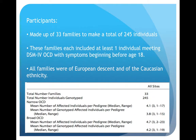The study was made up of 33 families totaling 245 individuals, each with their respective genotype data. These families met criteria including DSM-IV OCD with symptoms beginning between ages 4 and 18, and not having any form of developmental disorder, bipolar disorder, schizophrenia, or psychotic disorder. Furthermore, all families were of European descent and of Caucasian ethnicity.